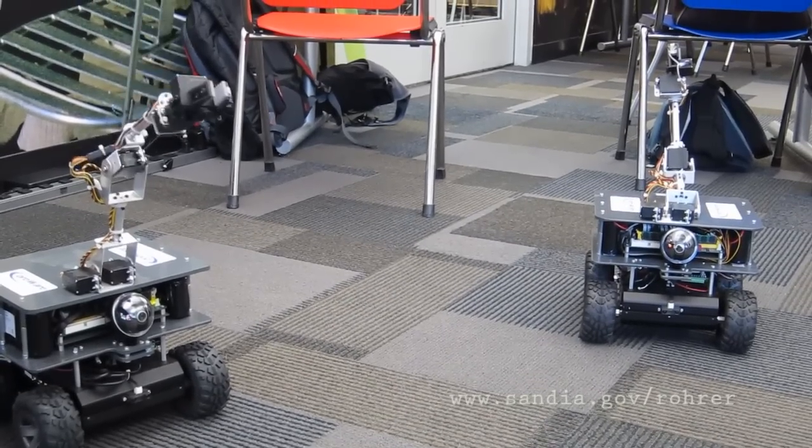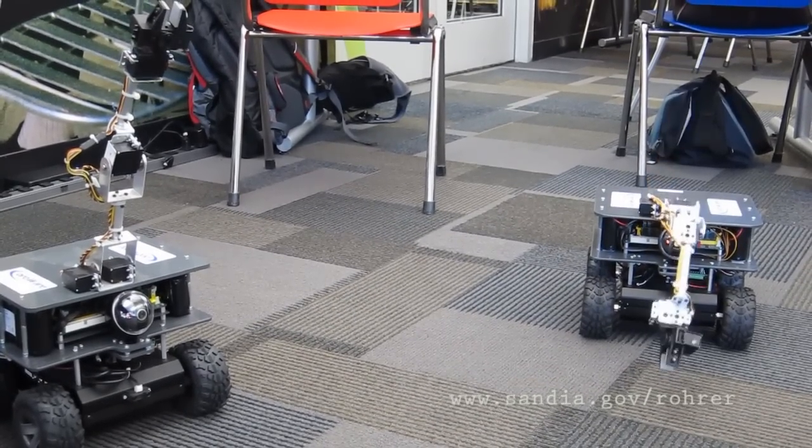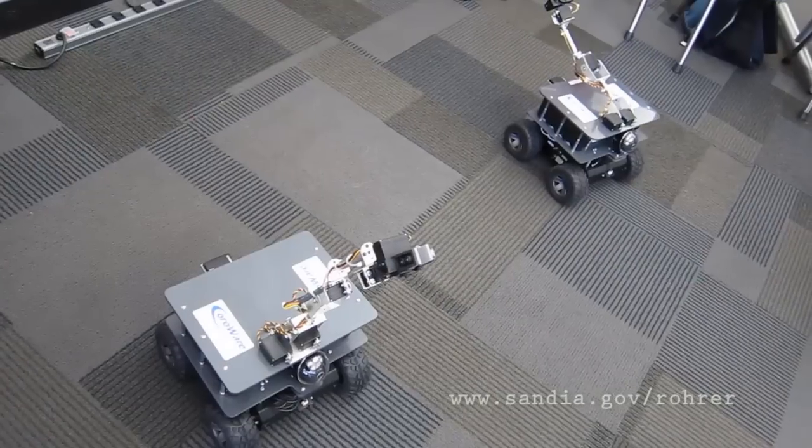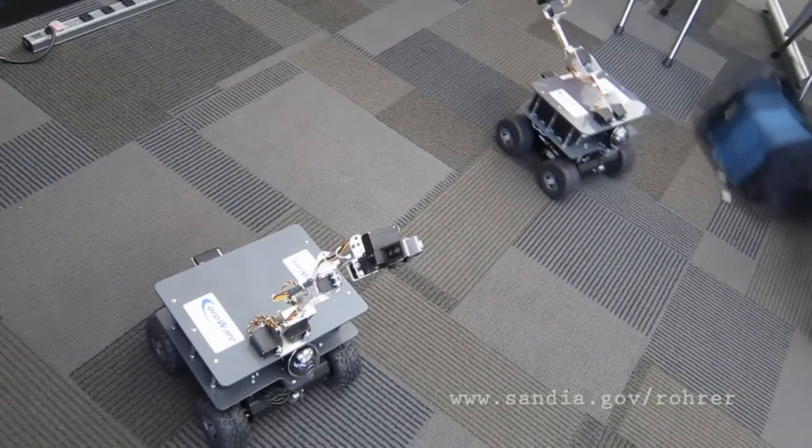At first, the robots don't know what they're supposed to do, so they try wiggling their arms and wandering around until they learn how to get rewards.